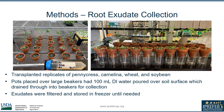The first part of the J2 choice experiment involved collecting root exudates from soybean, wheat, pennycress, and camoina. To do that, we transplanted replicates of the plants into clay pots. We placed the pots over large beakers that had 100 milliliters of DI water poured over the soil surface, which drained through into the beakers for collection. The exudates were then filtered and stored in the freezer until needed. We plan to send the exudates from different plant species for GCMS so we can compare the chemical composition of the solutions to determine the similarities and differences between them, which will allow us to possibly determine why the nematodes are attracted to their host.